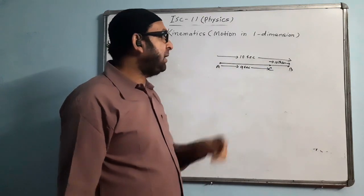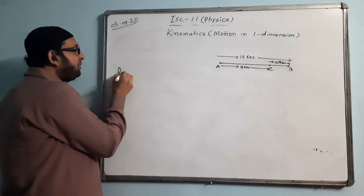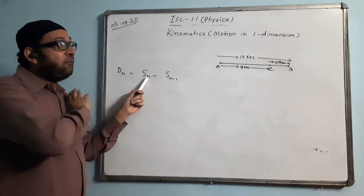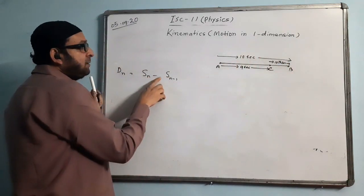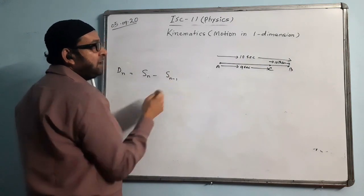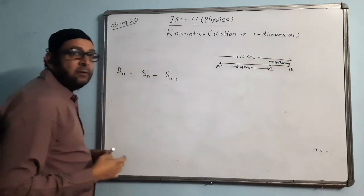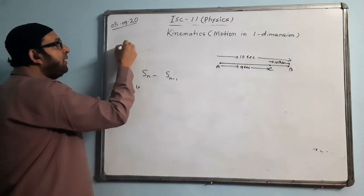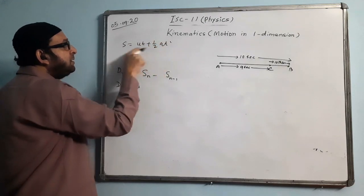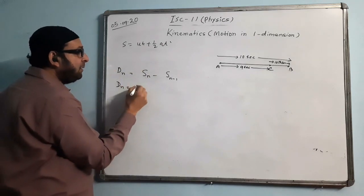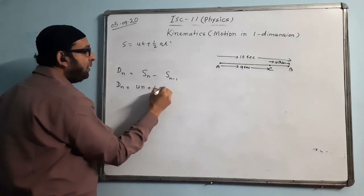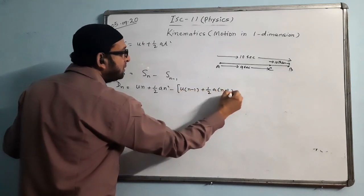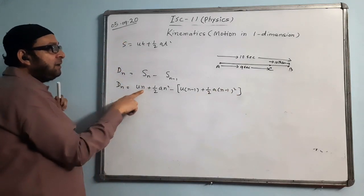So we write: d_n = s_n − s_(n−1), where d_n is distance moved in the nth second. s_n is the distance in n seconds = un + ½an², and s_(n−1) is distance in (n−1) seconds = u(n−1) + ½a(n−1)². So d_n = [un + ½an²] − [u(n−1) + ½a(n−1)²].